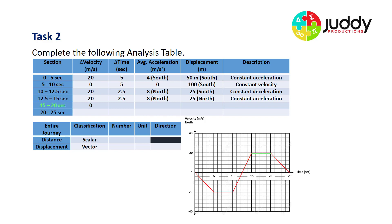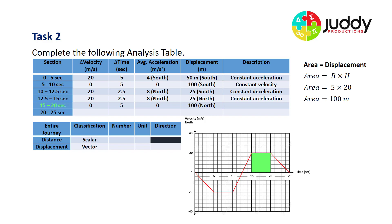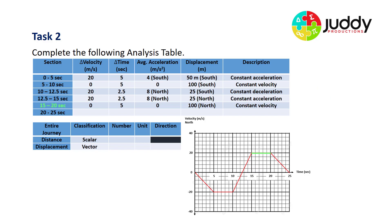From 15 to 20 seconds: no acceleration, no change in velocity — constant velocity the whole time. Change in time is five, gradient is zero. Displacement: still moving forward, so being displaced, giving 100 meters north. That's constant velocity.